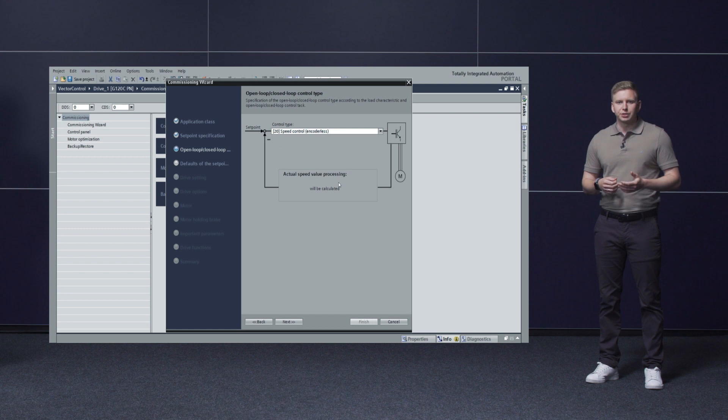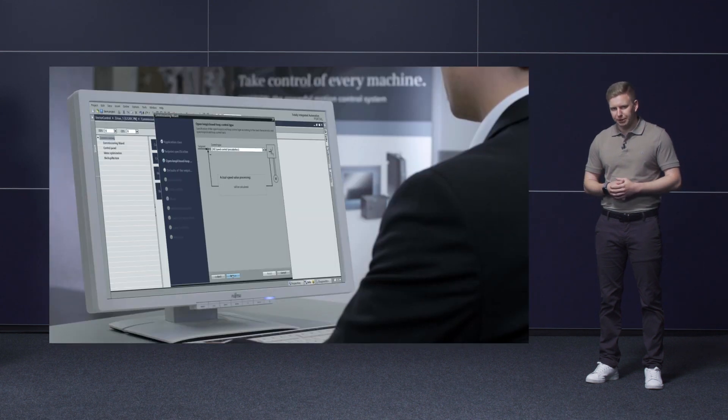This means that the closed loop controls are also easy to parameterize. Vector control is the optimum form of control for all applications where speed, torque, or position must be controlled with high precision.